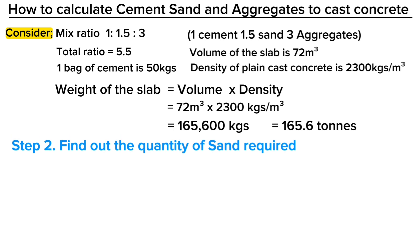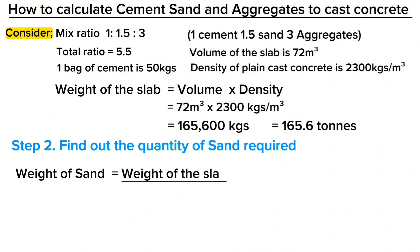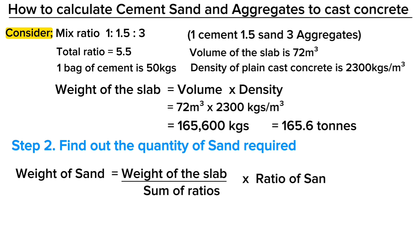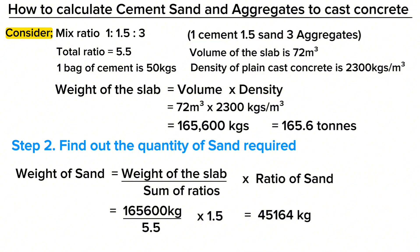Step 2 is to find out the quantity of sand required. The weight of sand is equal to total weight of the slab, divided by the sum of ratios, multiplied by the ratio of sand. When you fill in the required figures, you get the weight of sand as 45,164 kilograms.